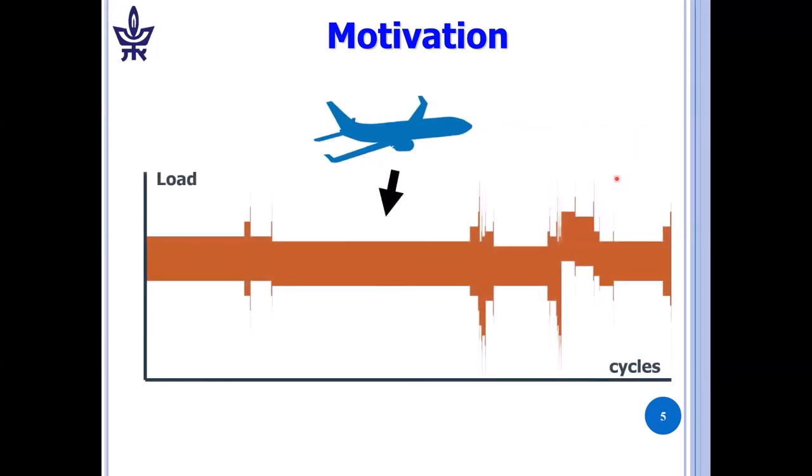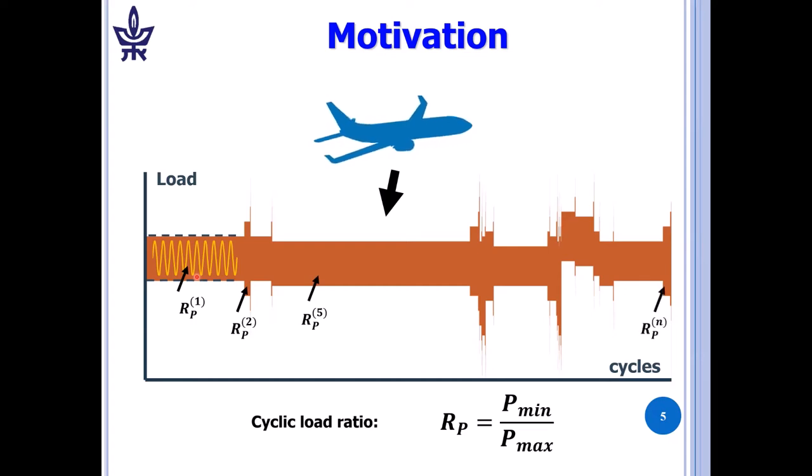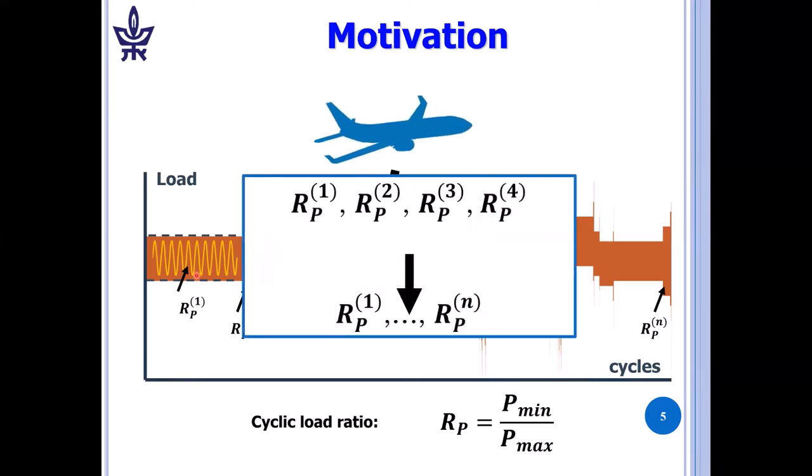An airplane sees a spectrum of loading and you can divide them into blocks. So here we have cycling between Pmax and Pmin, and we can define the cyclic load ratio RP, which is Pmin to Pmax. We can have many different cycle ratios. Our aim is not to do tests at each one of them, but to do tests at let's say four different cycle ratios and then be able to have a master curve, which would allow us to obtain the data for any cycle ratio. So this is our aim and this is our motivation.